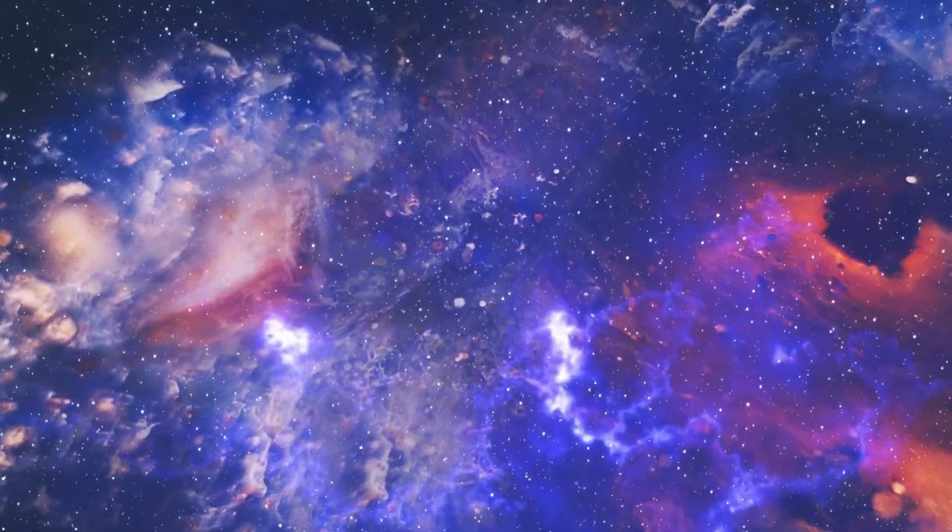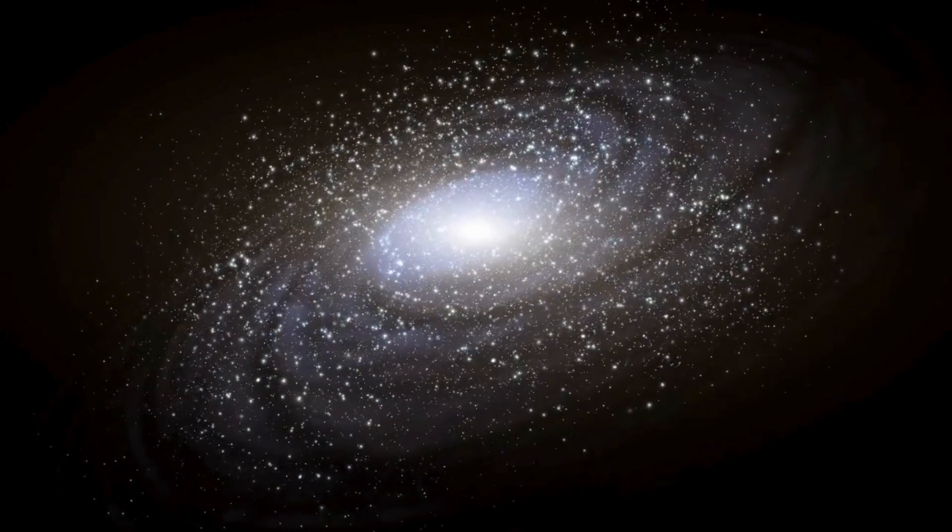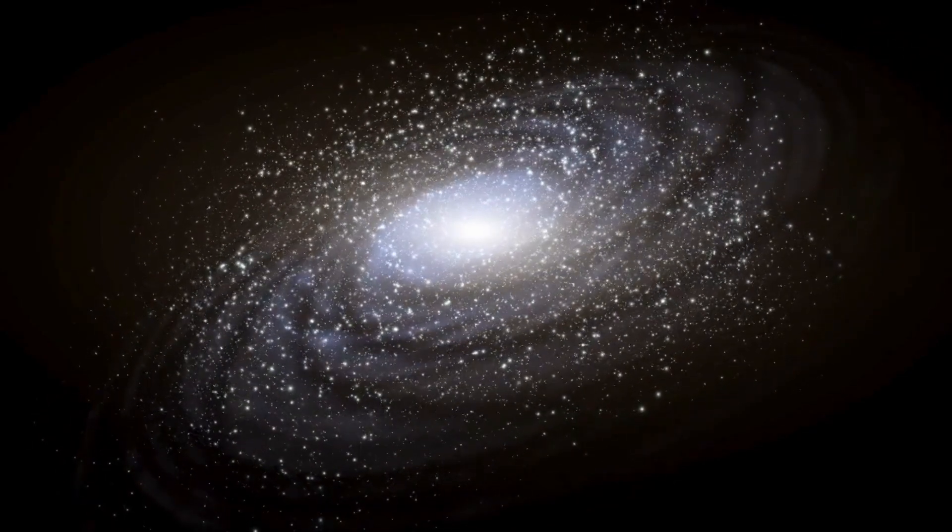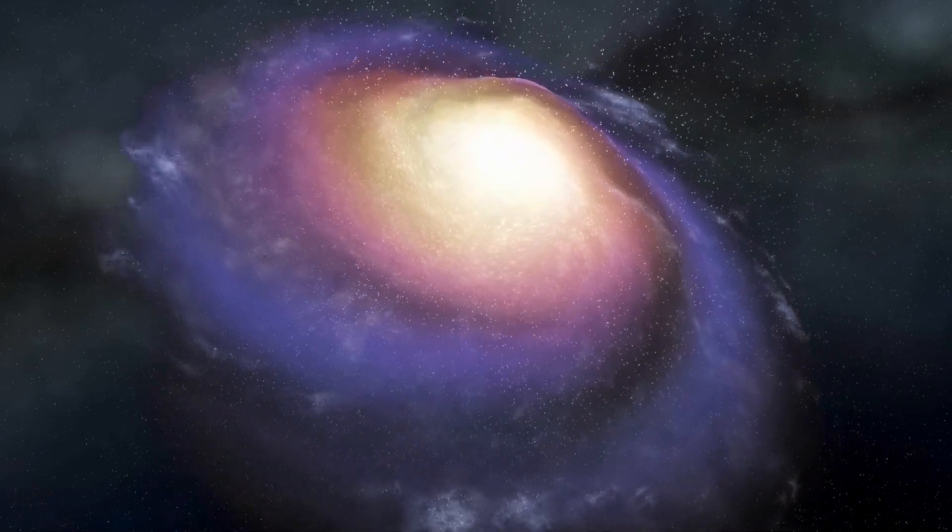As of April 1, 2024, there are 5,653 confirmed exoplanets in 4,161 planetary systems. Out of these, 896 systems have more than one planet.